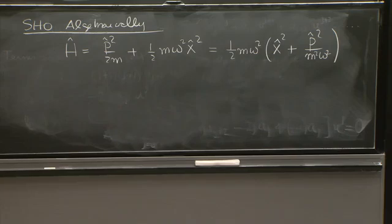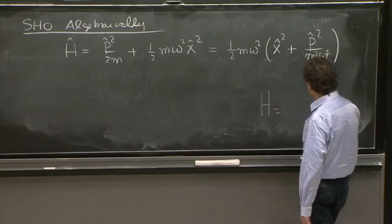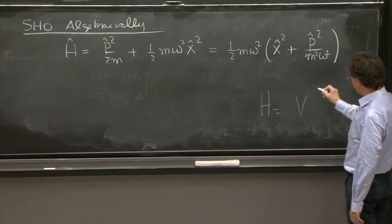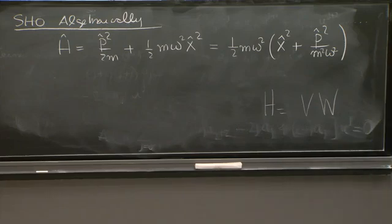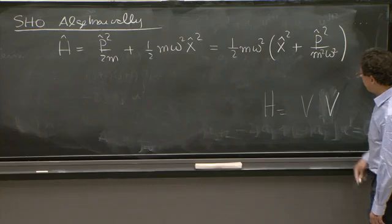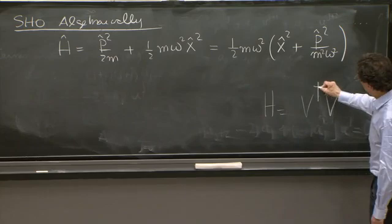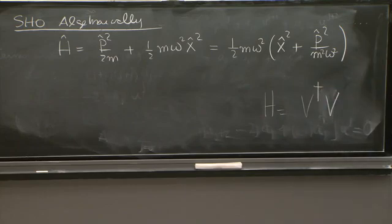Now, the idea that we have now is to try to factorize the Hamiltonian. And what we call factorizing the Hamiltonian is when you write your Hamiltonian as the product of two factors, v times w. Well, actually, that's not quite the factorization. You want kind of the same factor.